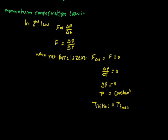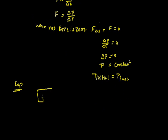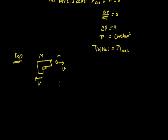Suppose we have a gun. A bullet is fired from the gun. The gun's mass is capital M and the bullet's mass is small m. The velocity of the bullet is small v. We want to find the recoiling speed of the gun — we know that when a bullet is fired there is a jerk on the shoulder of the person firing. We find this using the law of conservation of momentum.